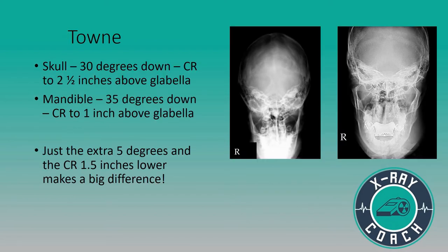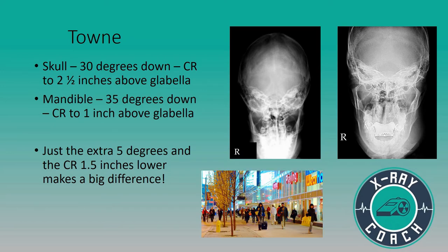First we will discuss the Towne's view. How can you keep this straight with the centering points, the angles, and which views? We need a little story about going downtown at the age of 30. You can't be 31, you can't be 29 — you must be 30 years old to go downtown because you have a two-and-a-half-year-old. So: 30 degrees down, 30 degrees downtown, and two and a half inches above the glabella will be your centering point.